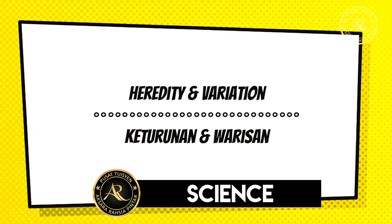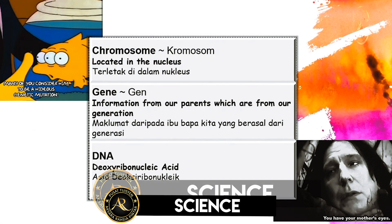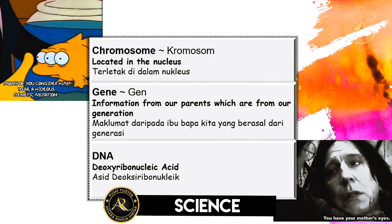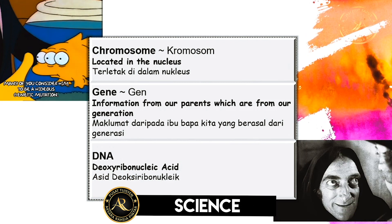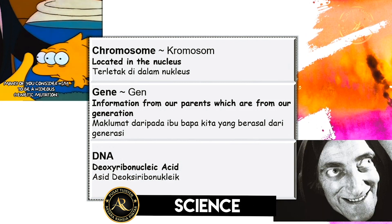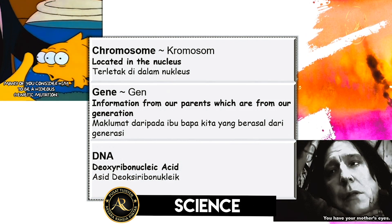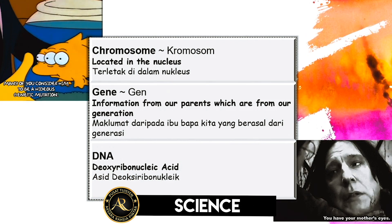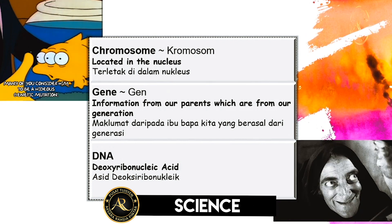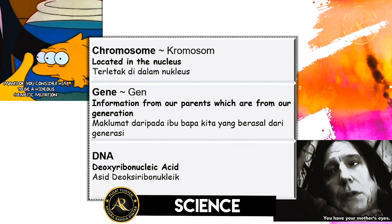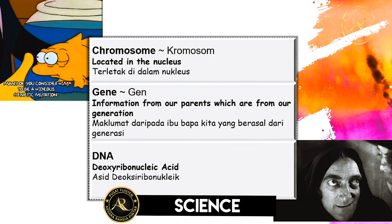So we take a look at heredity and variation. Not a lot of slides here. So the first one, you have to understand the three main words that we're going to learn for this particular chapter. Chromosome — in Bahasa Melayu it's the same as well. It's located in the nucleus.